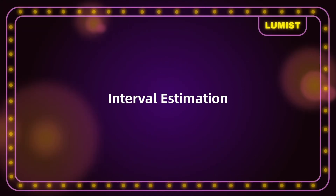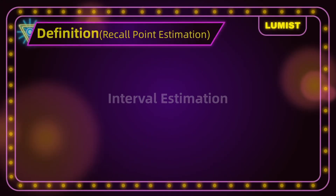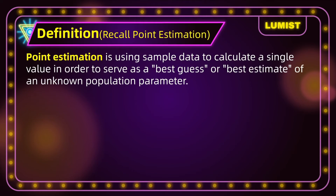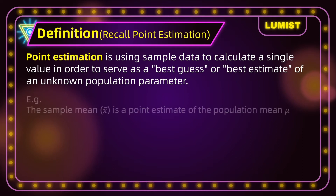Remember that in our previous video we talked about point estimation. Point estimation is using sample data to calculate a single value in order to serve as a best guess or best estimate of an unknown population parameter. For example, the sample mean x-bar could be a point estimate of the population mean mu.